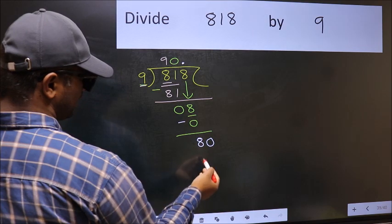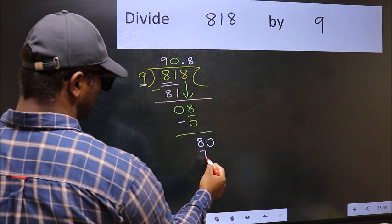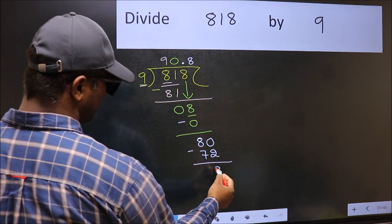So 80. A number close to 80 in 9 table is 9, 8, 72. Now you should subtract. We get 8.